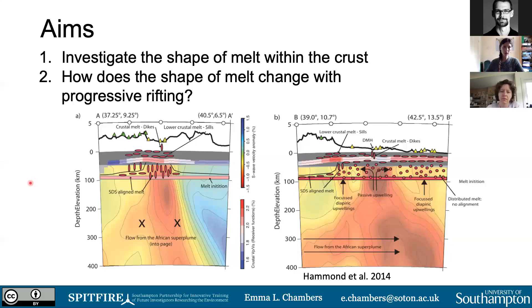The two main aims of this chapter were: firstly, to investigate the shape of melt within the crust — to look at whether melt is being stored as sills or as dikes — and also to look at how the shape of melt changed with progressive rifting, and whether it did change, such as having sills in one area and more dikes in another to see if there was a transition.